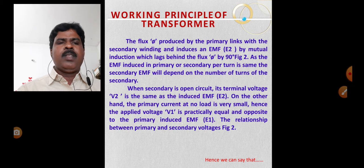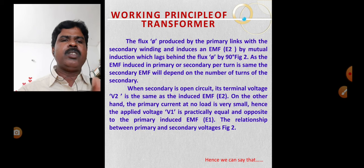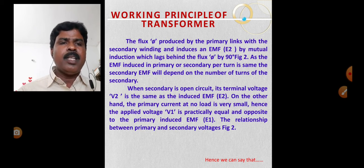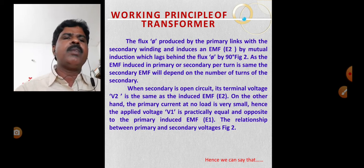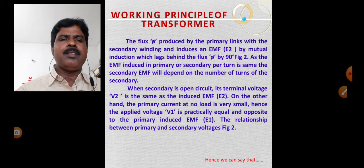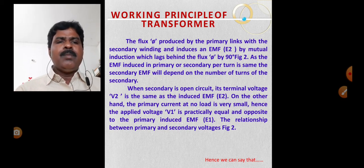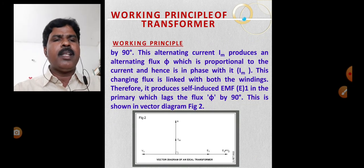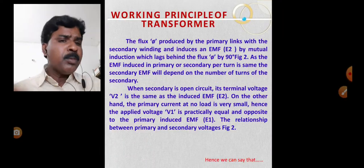When the secondary is on open circuit, its terminal voltage V2 is the same as the induced EMF E2. When the secondary winding terminals are open, V2 equals E2 — V2 is the terminal voltage and E2 is the induced EMF.